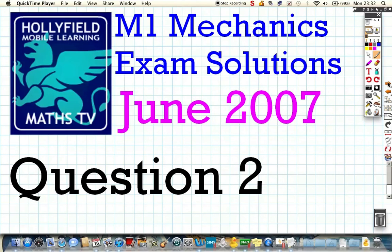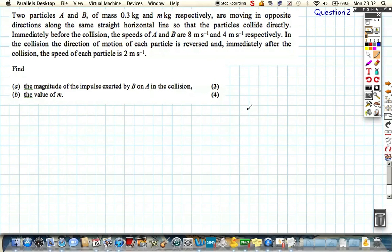Okay, question two from the June 2007 paper. Let's call it up. So two particles, A and B. Let's get a diagram for this first of all. There's going to be a collisions problem, so let's get a nice diagram.